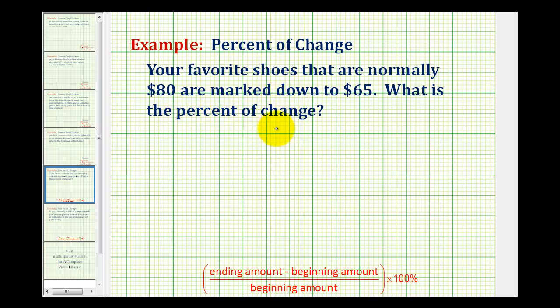In this problem, the beginning price of the shoes was $80 and the ending price was $65, and it is important that we keep this straight. This was the beginning amount and this was the ending amount.